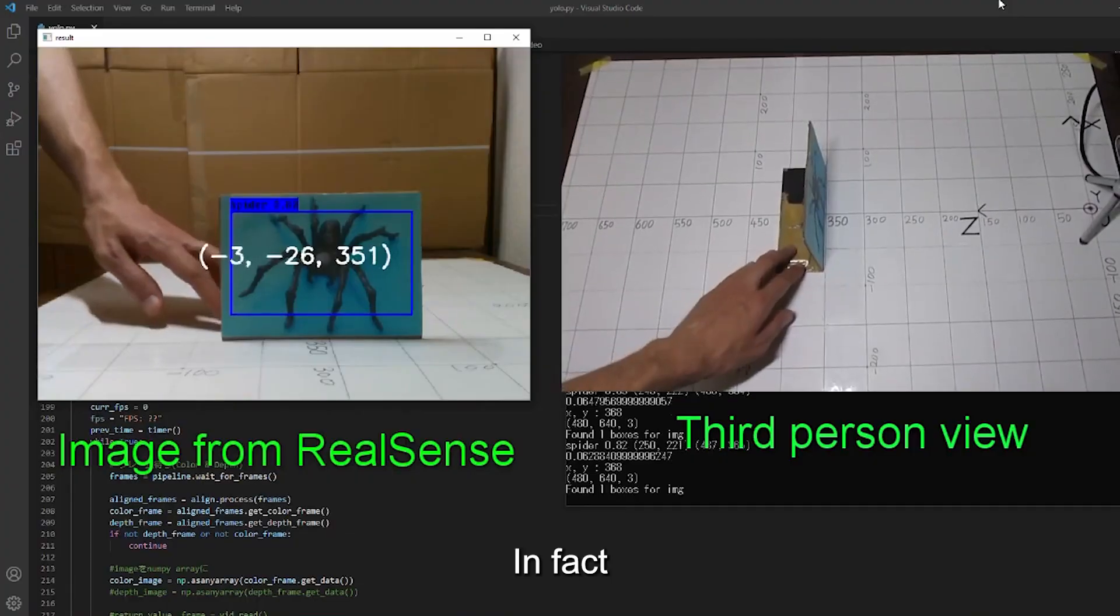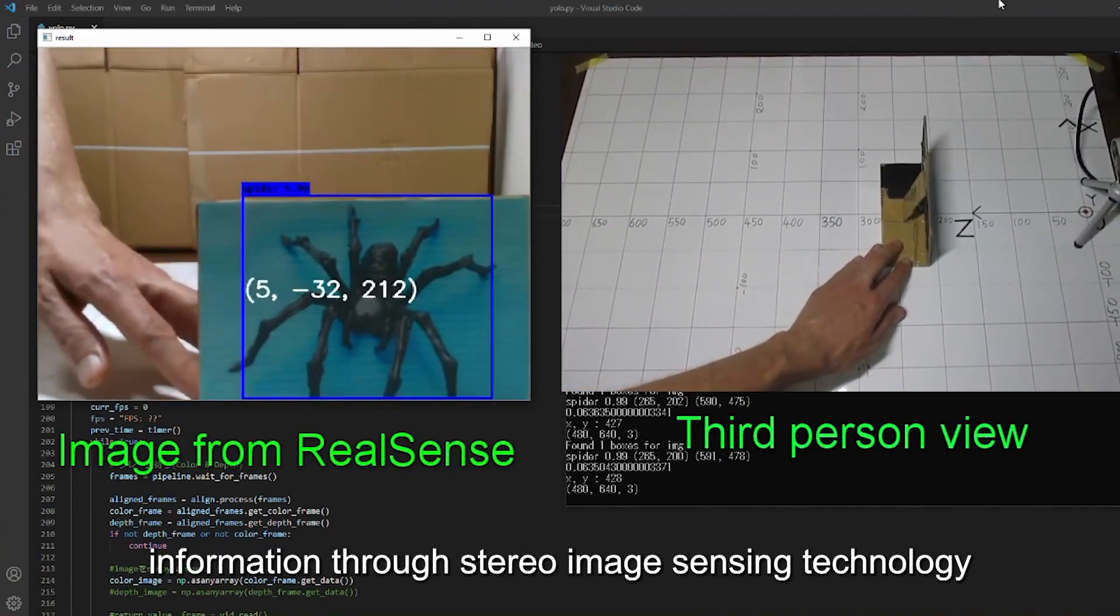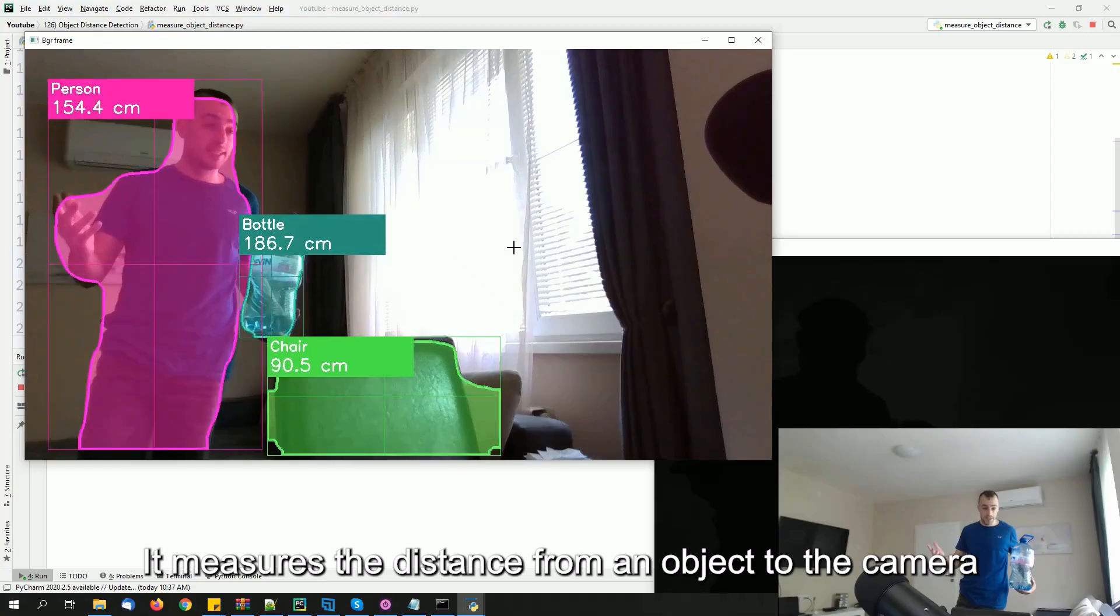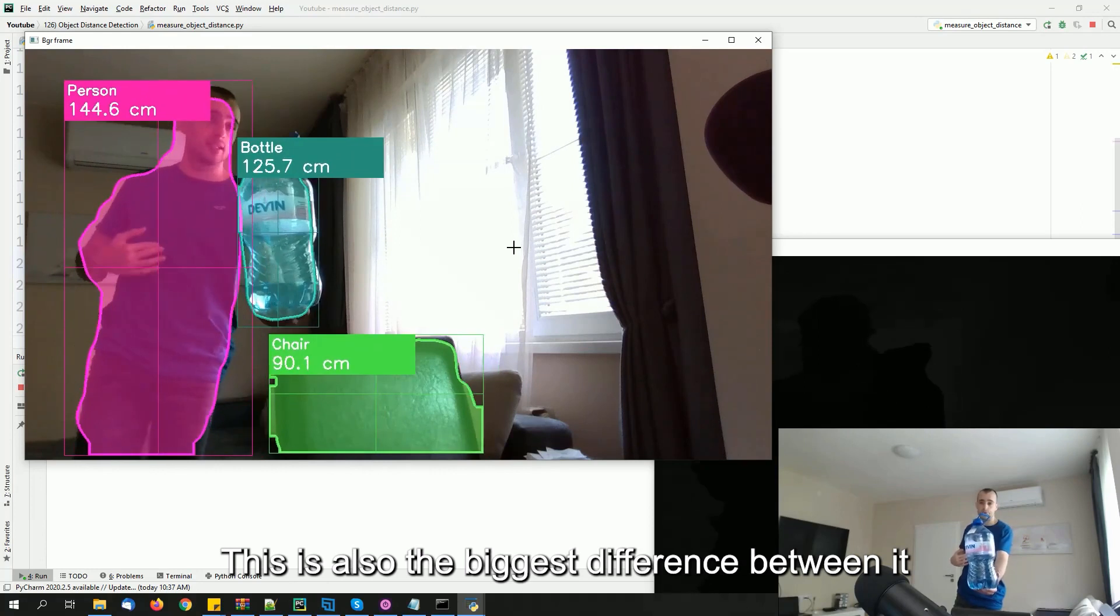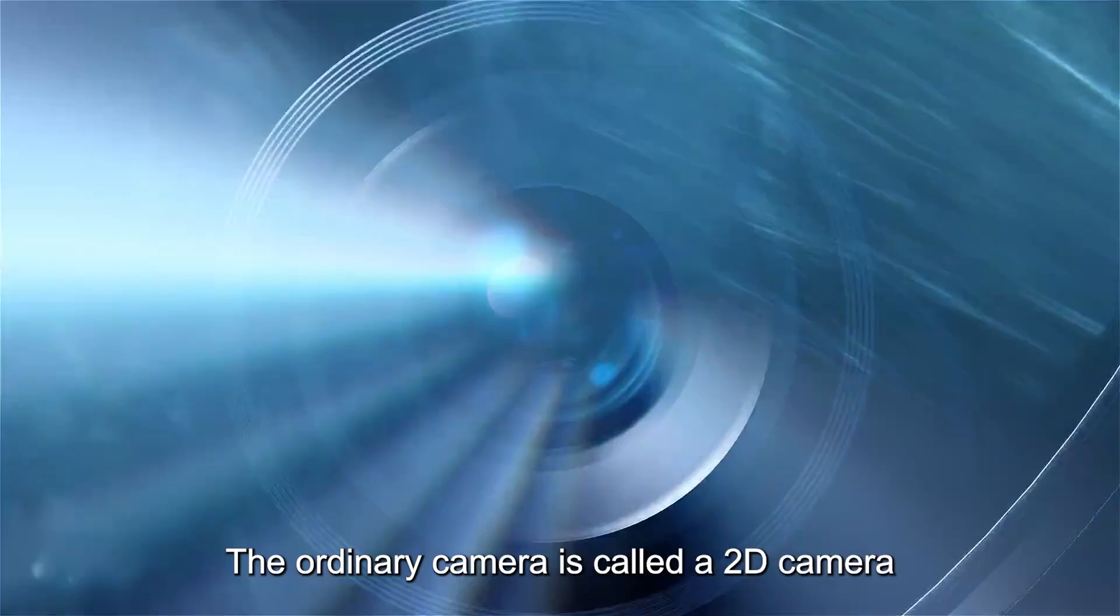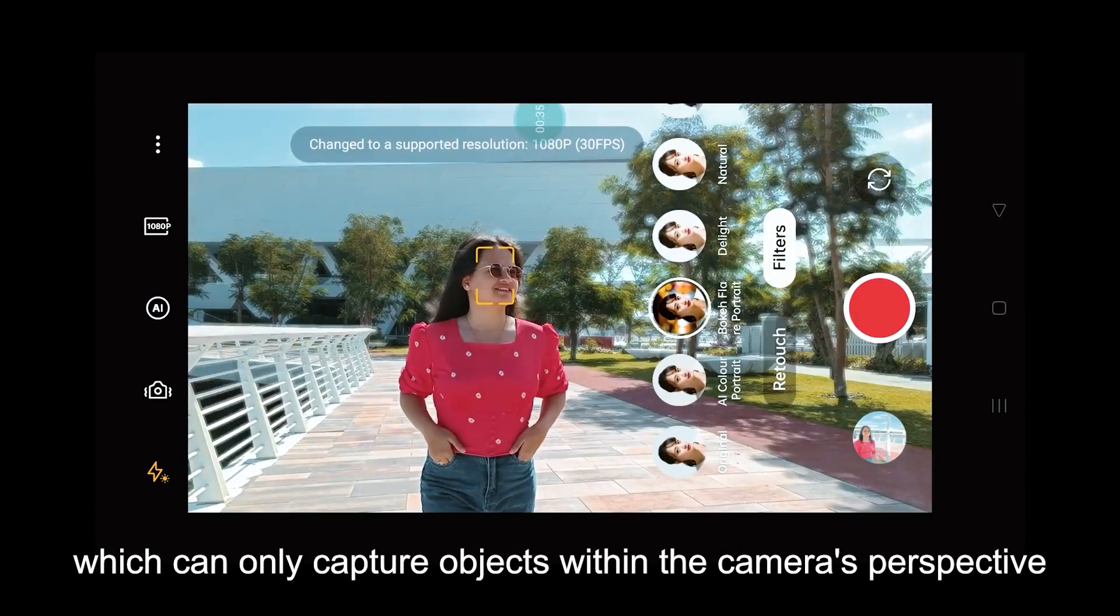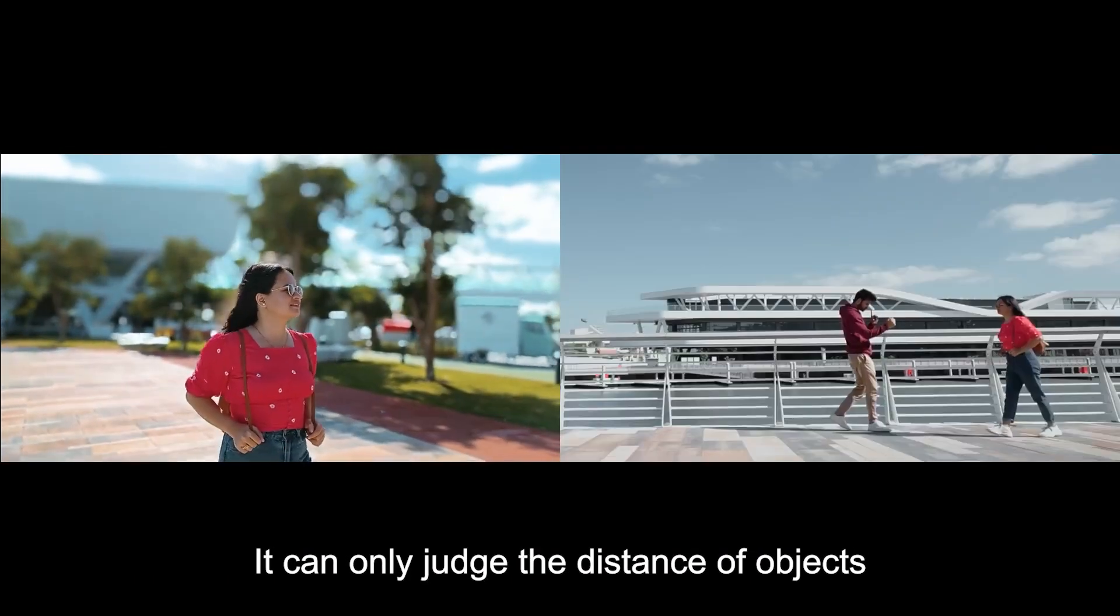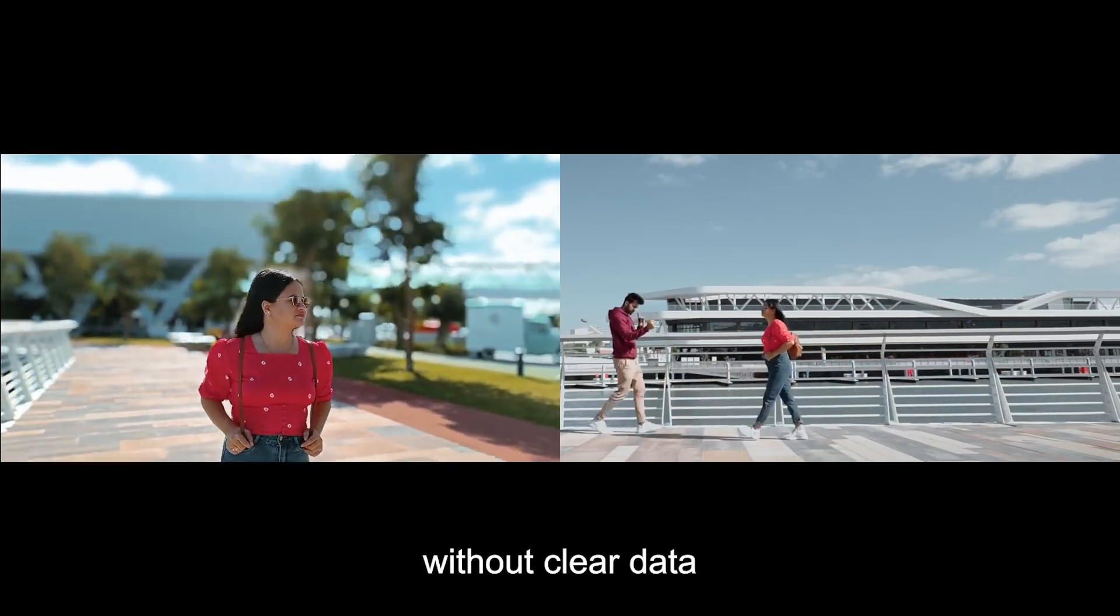What is a depth camera? Depth camera is a camera that calculates depth information through stereo image sensing technology. It measures the distance from an object to the camera. This is the biggest difference between it and ordinary cameras. The ordinary camera is called a 2D camera, which can only capture objects within the camera's perspective. It can only judge the distance of objects through semantic analysis of images without clear data.